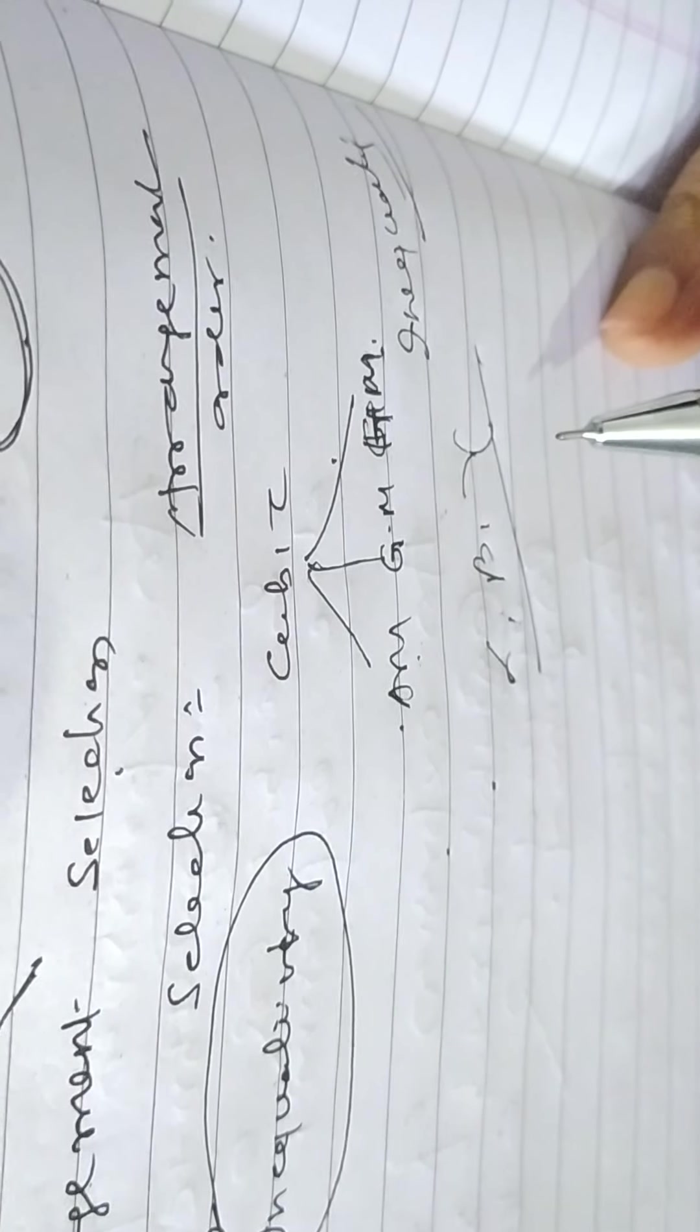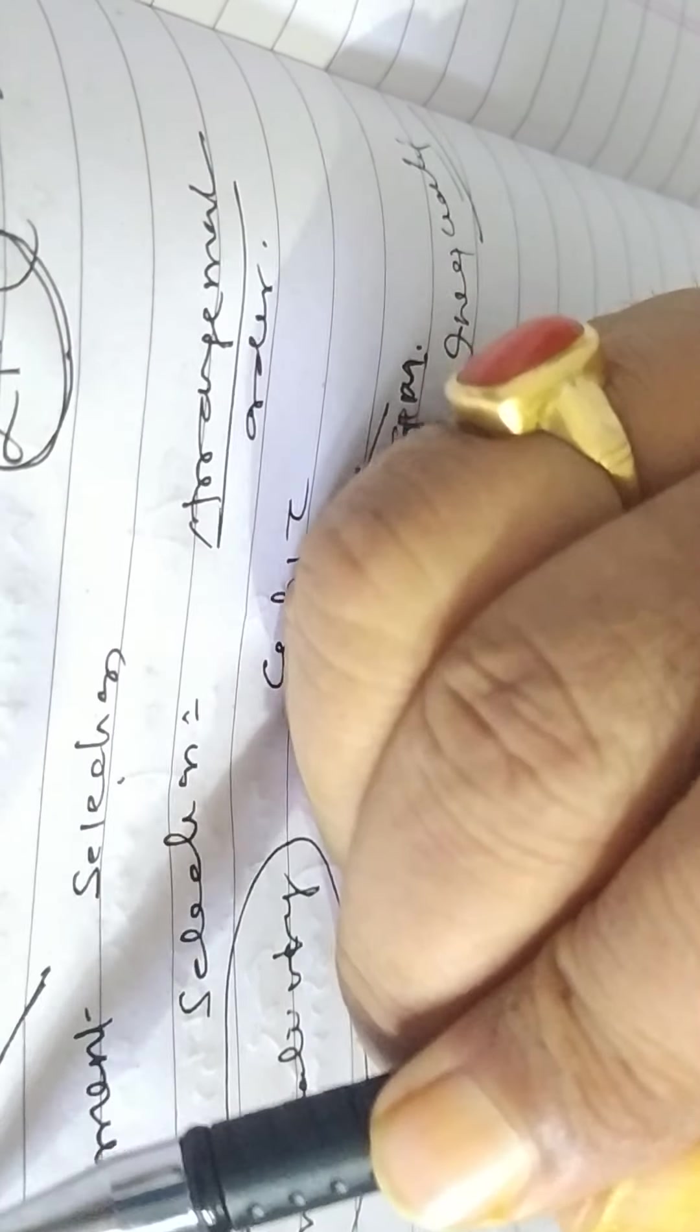So in this chapter, this chapter is also linked with inequality. As you know, questions in RMO, questions from inequality will be asked. In competition, questions from inequality will be asked.